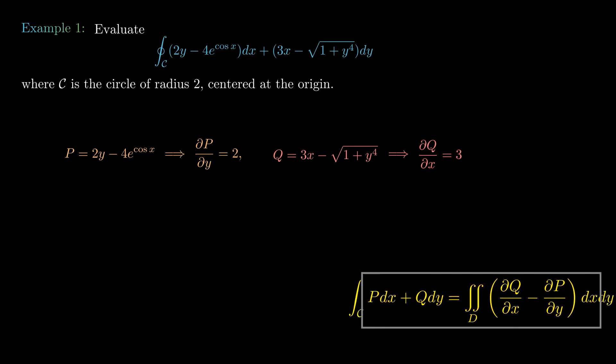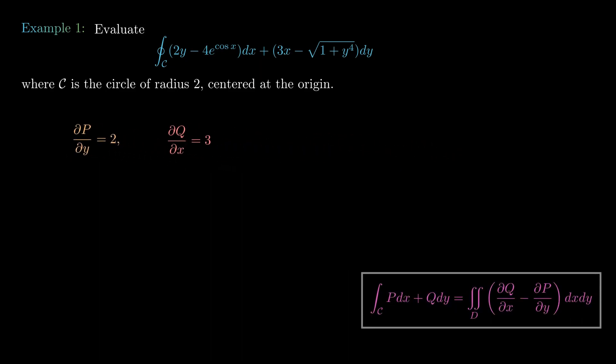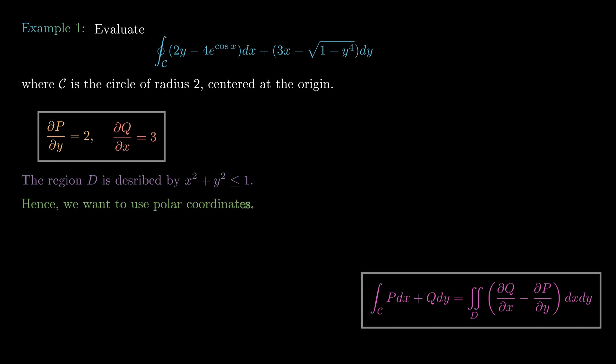Now we want to use Green's theorem, so we need to describe the region D which is bounded by the curve C, recalling that C is the circle of radius 2 centered at the origin. The region D is described by x squared plus y squared is less than or equal to 1, and hence since the region is circular we want to use polar coordinates.